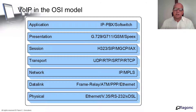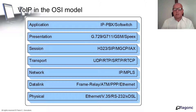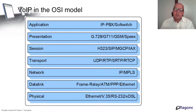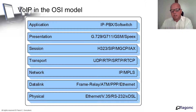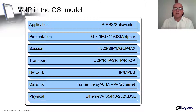In the session layer, we have protocols to establish, maintain, and disconnect sessions — these are the protocols for calls. You can establish a call, manage a call, and disconnect the call. In this case, we will compare H.323, SIP (Session Initiation Protocol), MGCP (Media Gateway Control Protocol), and IX. These protocols are in the same layer of the OSI model — the session layer — and we can compare those protocols between each other.